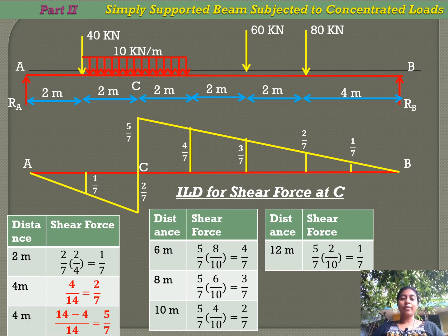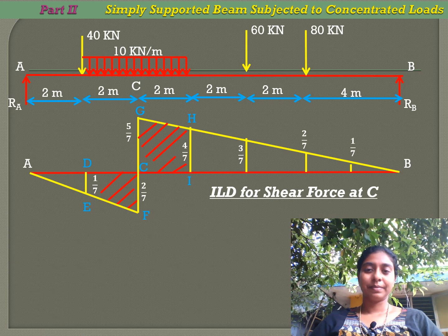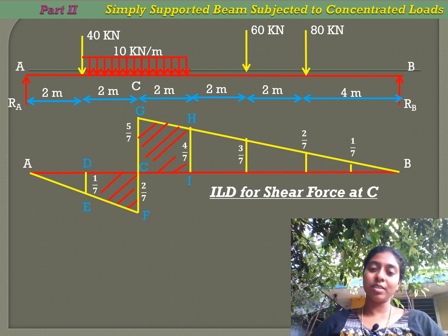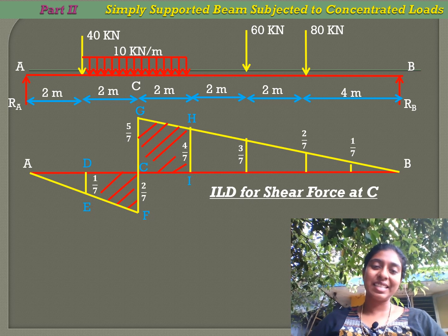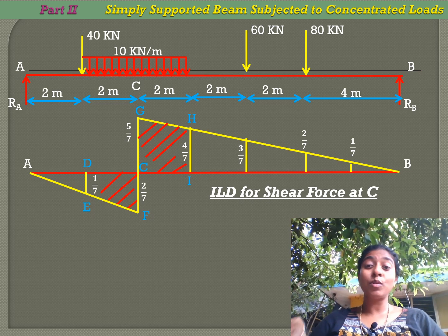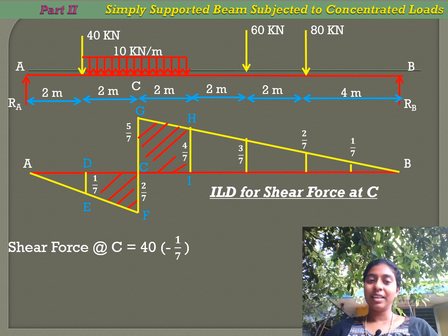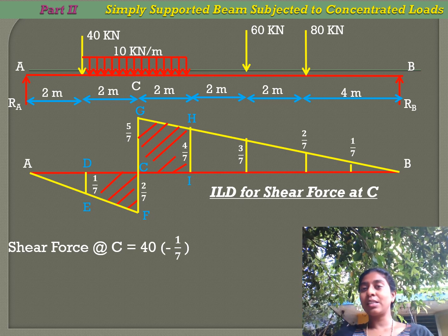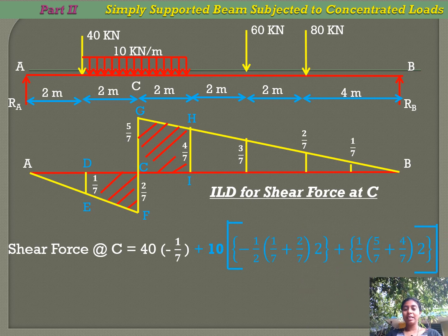We have noted the ordinates and drawn the influence line diagram for the shear force at C. Now we find the value of shear force for this loading condition. We multiply the ordinate by the magnitude of the load for concentrated loads, and multiply the area under the influence line diagram by the magnitude for UDL. For the shear force at C, the first load is 40 kilo newton and the ordinate is minus 1/7.